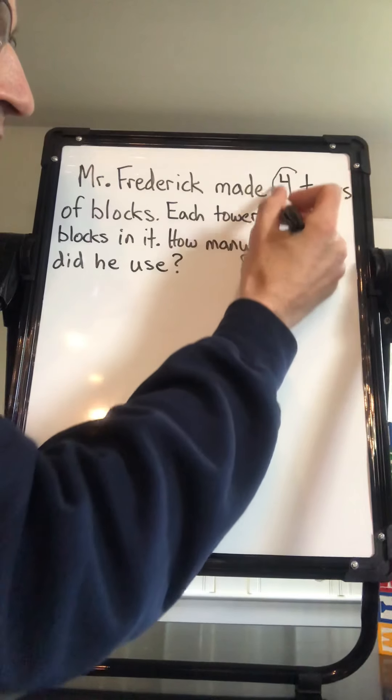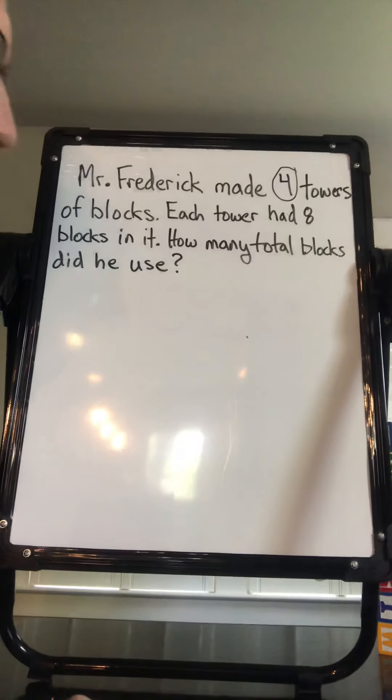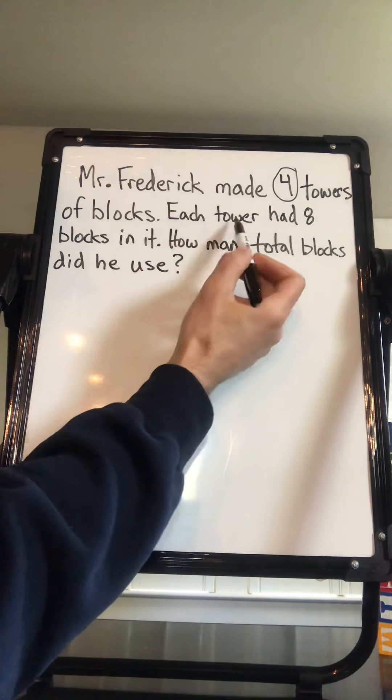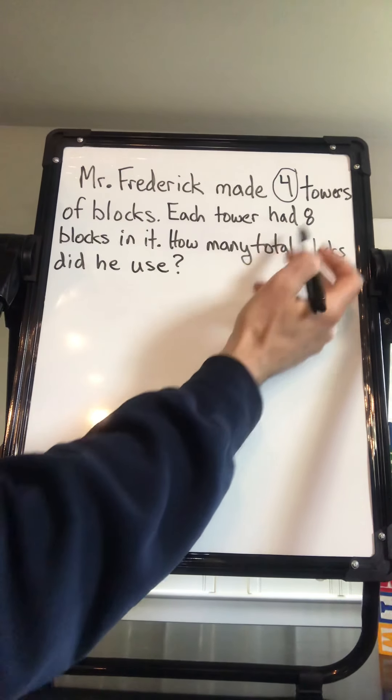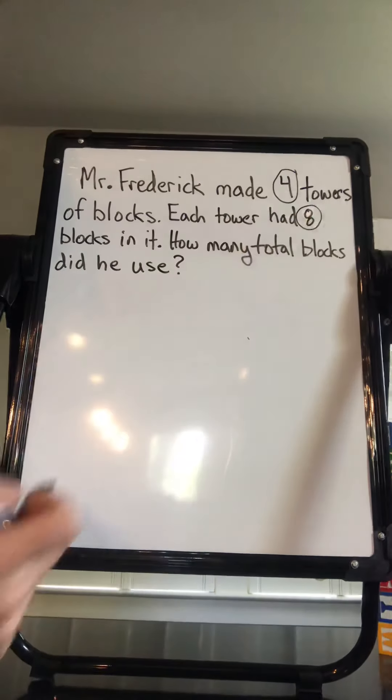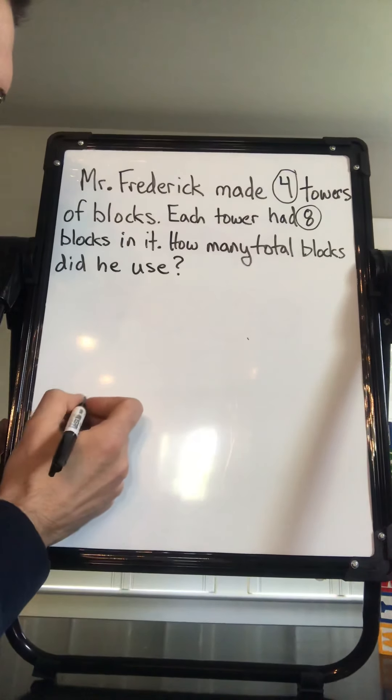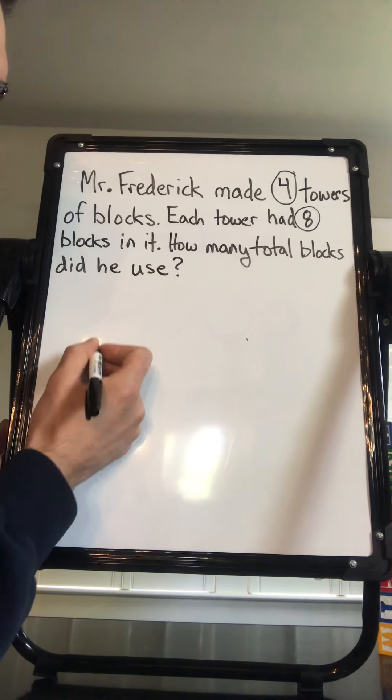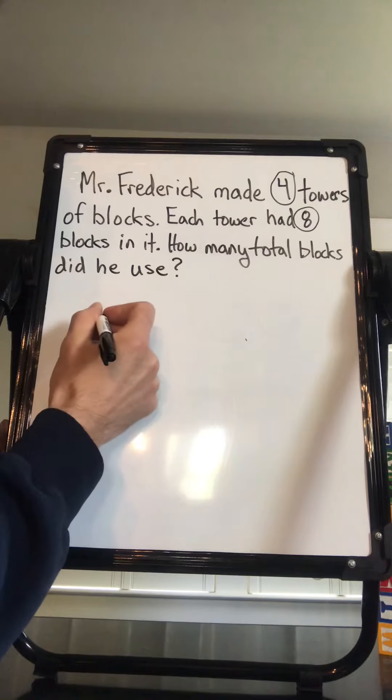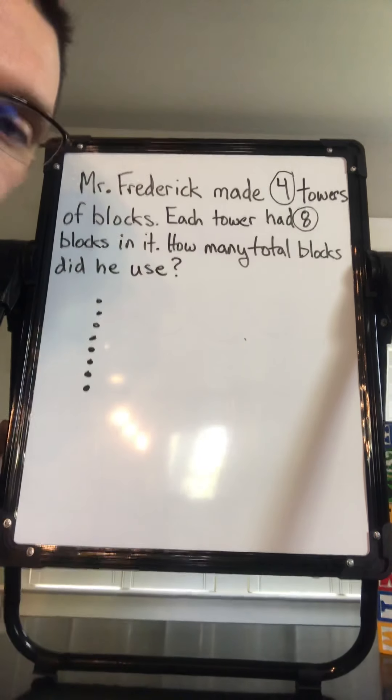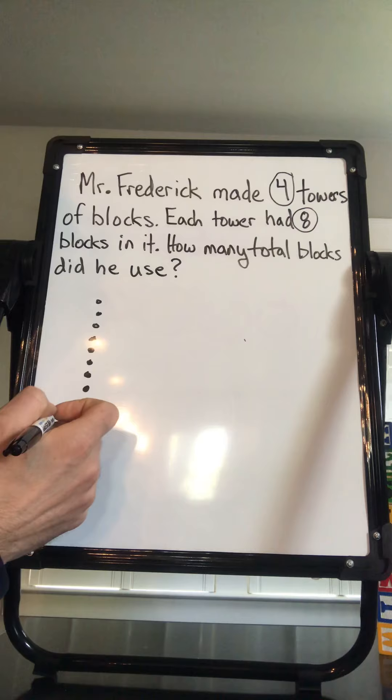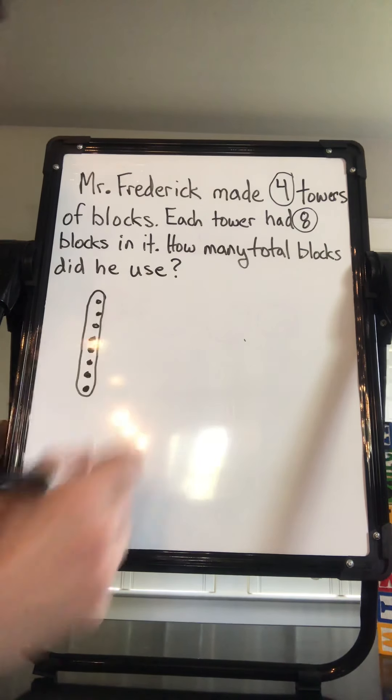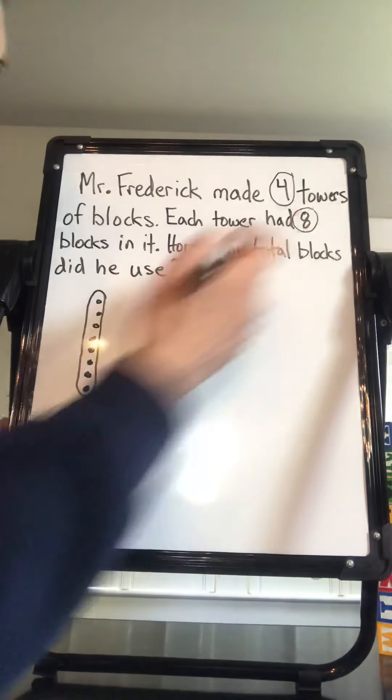All right, let's solve this together. So I noticed the problem said that I had four towers of blocks. That's the first important thing that I noticed. And then it said in each tower there were eight blocks. So if I was going to draw this problem, I'm just going to make little dots. One, two, three, four, five, six, seven, eight. Each of those dots is like a block in this problem. There's eight of them. And then I'm going to put a circle around those because that's one tower.